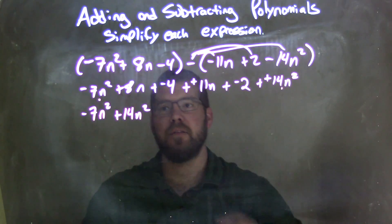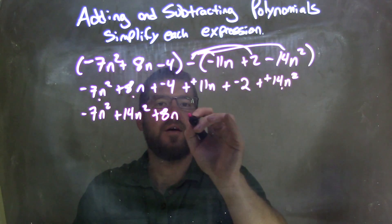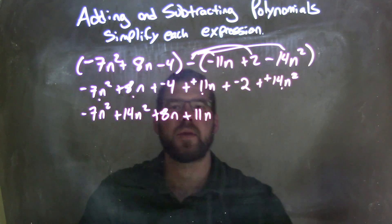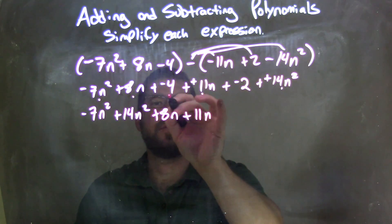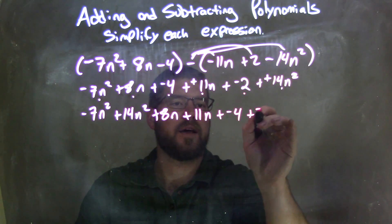So now let's get my regular n's: plus 8n right there, and plus 11n right there. Then we have our constants. I don't see anything else with n, so constants: negative 4 and negative 2.